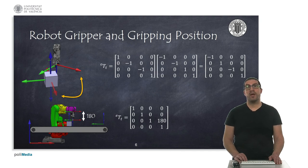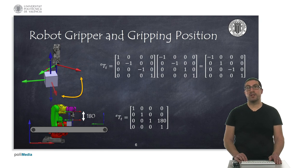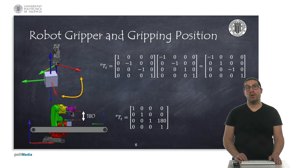If we want to pick the object, we can place the gripper frame in the position and orientation indicated with the orange arrow. The current tool frame is centered on the object with the x-axis pointing towards you and the z-axis pointing downwards. The object reference frame has the x-axis pointing backwards and the z-axis pointing backwards. Therefore, the relative transformation between the tool and the object, T_ot, involves a 180-degree rotation around x and then a 180-degree rotation around z.